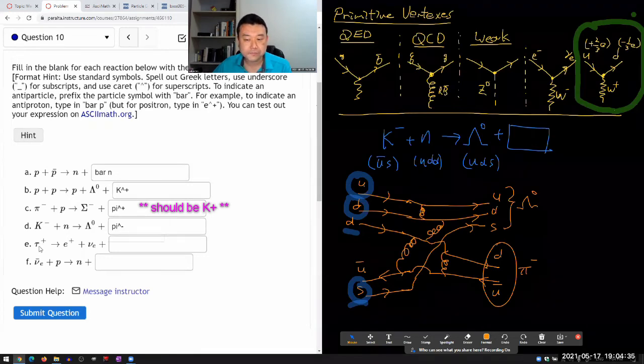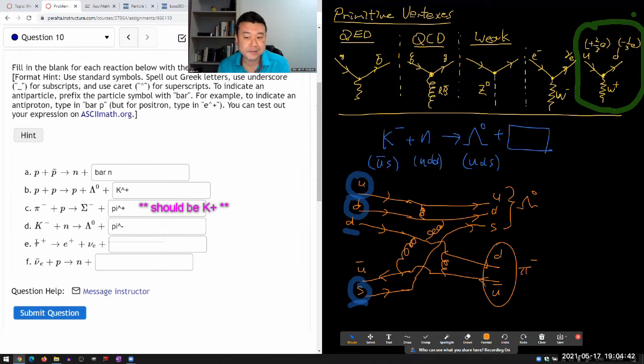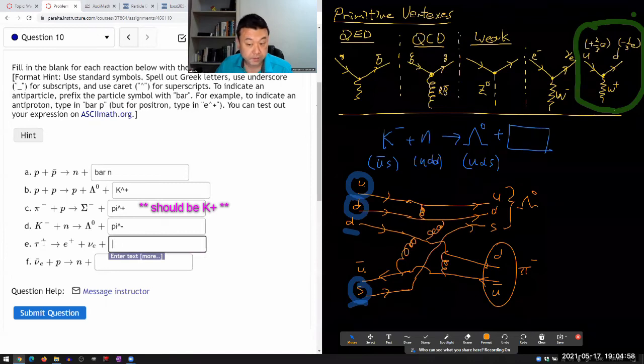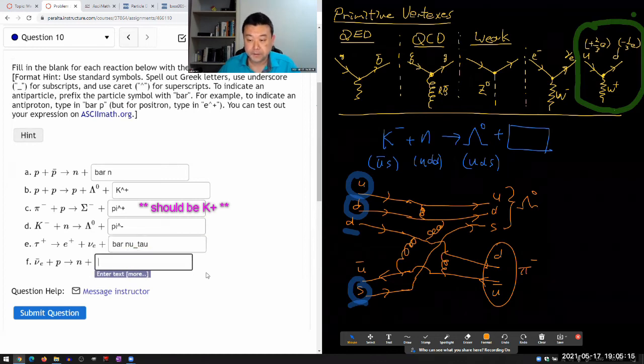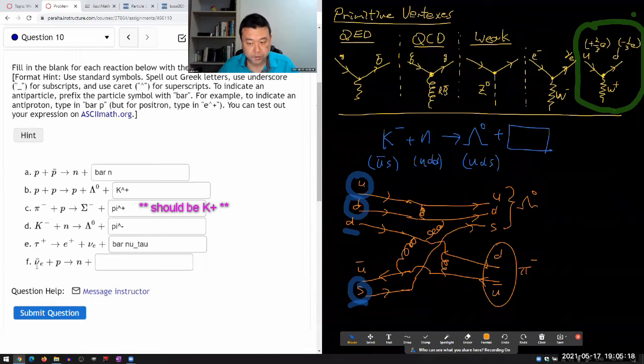Tau, this one I'm not going to draw a Feynman diagram for because I've drawn one for decay of muon in the lecture. This is basically the same with a muon replaced by a tau lepton. And really, the only thing that changes is what would have been the muon antineutrino here, if this were muon, it now becomes tau antineutrino. So it'd be tau neutrino, and it's antineutrino, so there should be a bar.